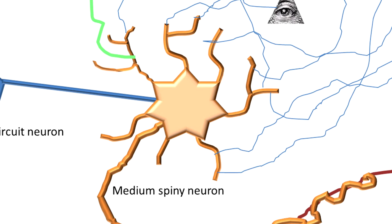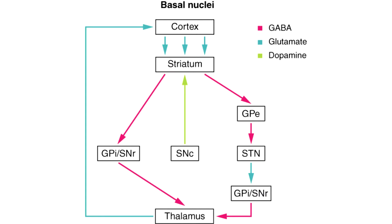The medium spiny neurons exhibit few spontaneous activities and appear to encode decisions to move towards a goal, rather than the direction and force needed to reach it. Output from the striatum to the pallidum: the medium spiny neurons in the striatum, upon receiving simultaneous excitatory inputs, send downstream inhibitory GABAergic signals to the globus pallidus and substantia nigra pars reticulata, and due to a high degree of convergence, the striatal neurons exert a broad but weak influence over many.